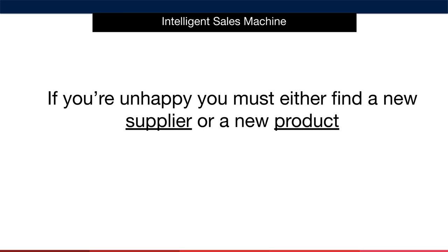If you're happy with the sample item, simply proceed with the supplier who you're happiest with thus far. I'll teach you the next steps in this process in this module's remaining videos. If on the other hand you're not happy with the item, you can either find a new supplier or a new product. Remember, you should have discussed this item with at least two suppliers. Also, if you find certain elements that you're unhappy about, you can raise these with your supplier and ask them if they can fix these issues and send you new samples. To be honest though, if the item isn't good enough at this point, I would recommend moving on for now while you're just starting out.